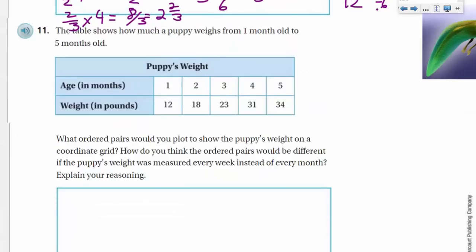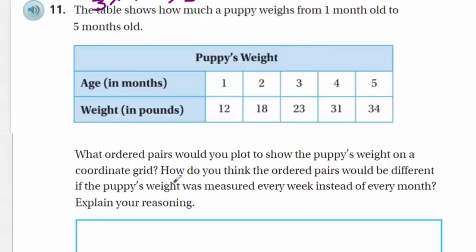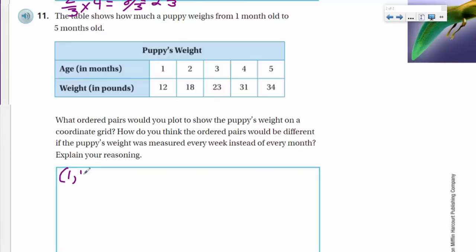Let's move on. The table shows how much a puppy weighs from 1 month old to 5 months old. Puppies weight. Okay. Here we have age in months, and the weight, the unit of measure is going to be pounds. So after 1 month or 1 month, the puppy is going to weigh 12 pounds. And then, after the second month, it's 18, and so forth. What ordered pairs would you plot to show the puppy's weight on a coordinate grid? Question number 1. How do you think the ordered pairs would be different if the puppy's weight was measured every week instead of every month? Explain your reasoning. All right. It looks like we have a few things here. Well, first things first, this is what ordered pairs would you plot to show the puppy's weight on a coordinate grid? Well, we'd have two values here. We have the age, and we have the weight. So we'd probably want to show the age, maybe on the x-axis, and then we could show the weight on the y. So let's go ahead and put those ordered pairs first. So we would have, again, 1, 12, because this would represent the x, this would represent the y. That's what I would do. And lastly, 5, 34.